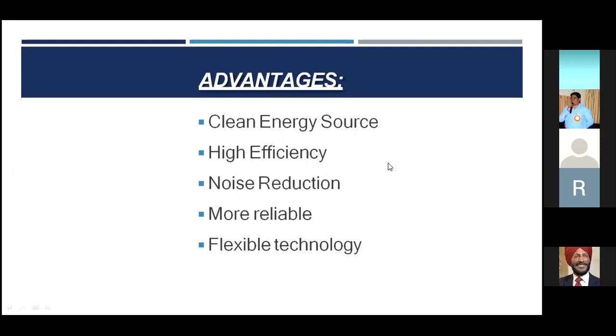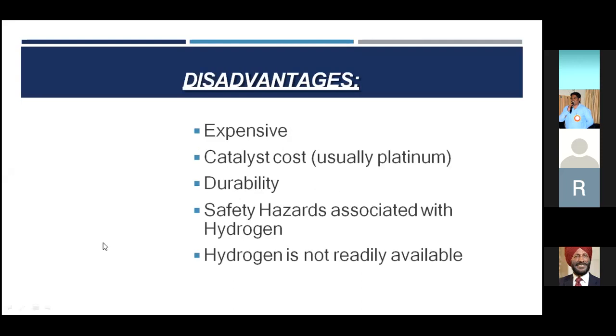Coming to disadvantages, there are a lot of disadvantages in fuel cells also. They are more expensive, and the catalyst which we use is platinum catalyst, so platinum is more expensive. Disadvantages include durability. Fuel cells are not much durable, and safety hazards are associated with hydrogen. Hydrogen is not readily available. We cannot find hydrogen everywhere because we need to first collect the hydrogen, which is not readily available.